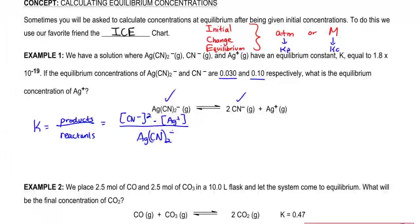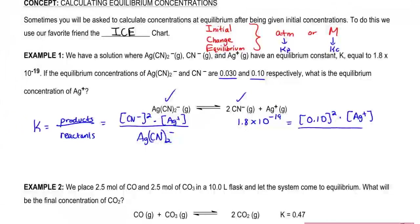What we're going to do now is plug in the numbers that we know. We know K is 1.8 times 10 to the negative 19. CN⁻ was 0.10 and it's going to be squared. Ag⁺ is what we're looking for, so we'll keep it as a variable. Divided by AgCN₂⁻ which is 0.030.